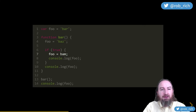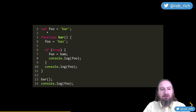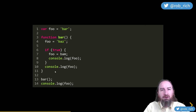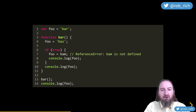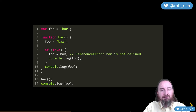Now let's set foo to bam inside the function. First phase: define the outer foo. Second phase: set foo to bar, call the function. No foo in inner scope, so find the outer foo and set it from bar to baz, then try to set it to bam. Going looking for a bam variable — there isn't one in this scope, or any outer scope. So we get a reference error: bam is not defined. We can set a new variable, but we cannot get the value of a variable that doesn't exist.